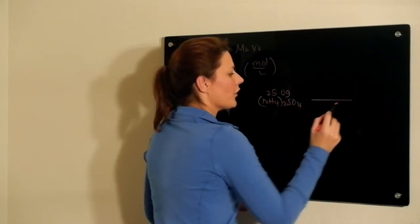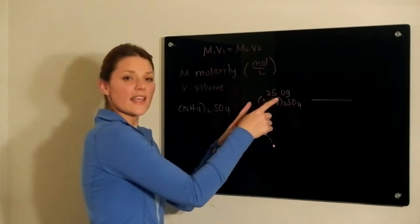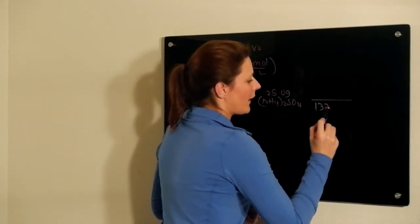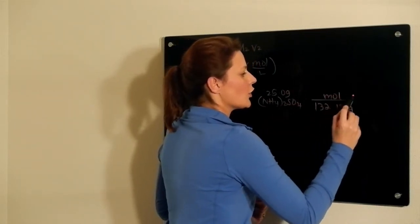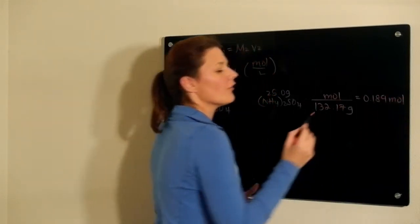Looking at the fact that we need to solve for molarity, we need to take that gram amount and convert it to moles using the molar mass of this ammonium sulfate compound. Doing that, we find we have 0.189 moles of ammonium sulfate.